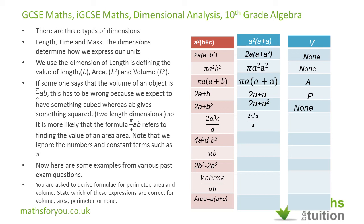For the next one, substituting A for C and D, the A's cancel and we end up with 2A cubed, so this formula is valid for volume. For the following expression, we have 4A cubed plus A cubed — both are volume dimensions — so this formula is also valid for volume.